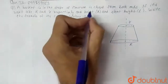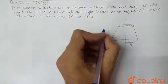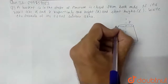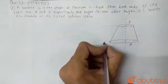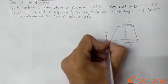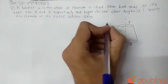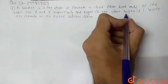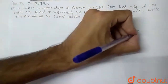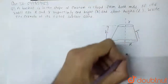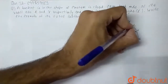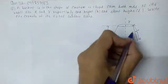The radius of the larger circle is capital R. We are also given the height H of this frustum — so this distance here is height H — and the slant height, which is L. This is the slant height L of the frustum.